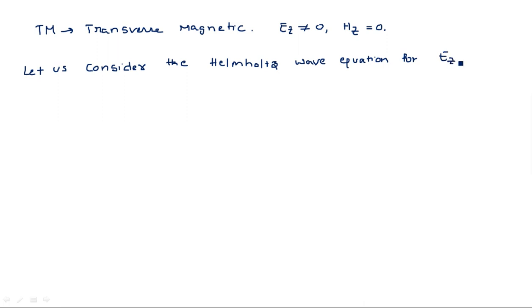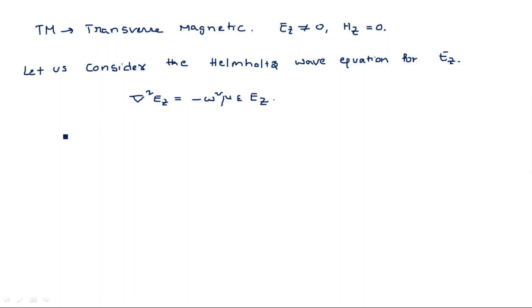We consider the Helmholtz wave equation for Ez, where z is the direction of propagation. The equation is: del² Ez = −ω²με Ez. This is the same standard wave equation we considered for the rectangular waveguide, but now applied to the circular waveguide.